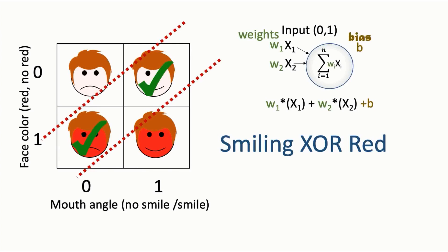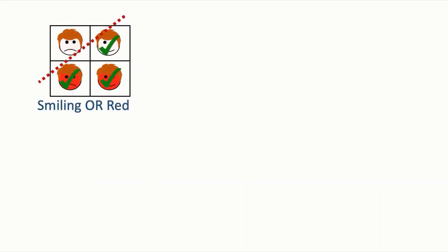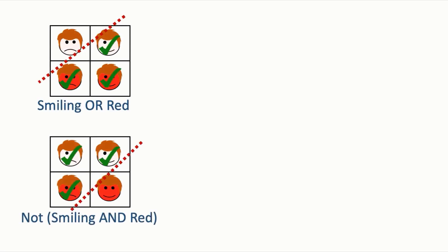We've hit the limits of a single neuron model. A single neuron will not be able to detect a friend that is bluffing only when they are pale and smiling, or red and frowning. Now I want to show you how two single neurons can be combined to handle this non-linearly separable XOR problem. XOR is actually equivalent to the intersection of two linearly separable problems.